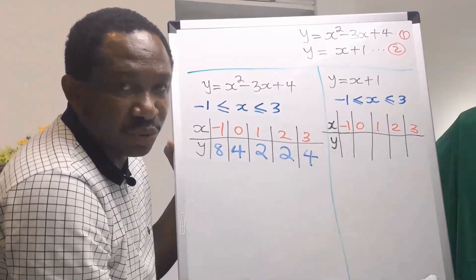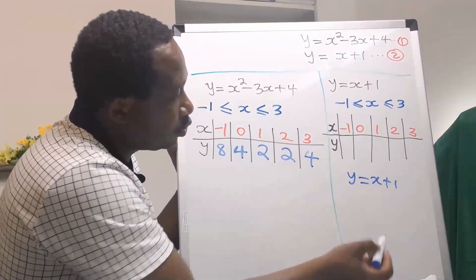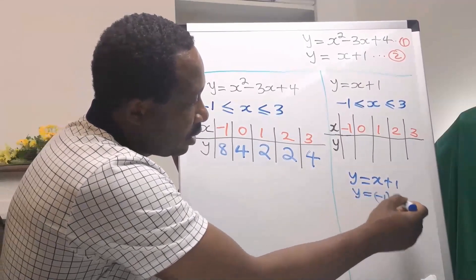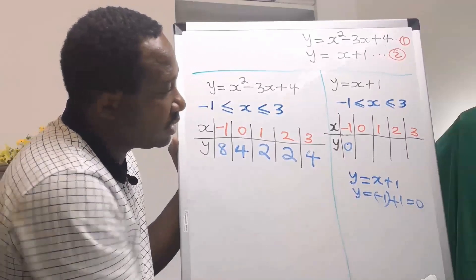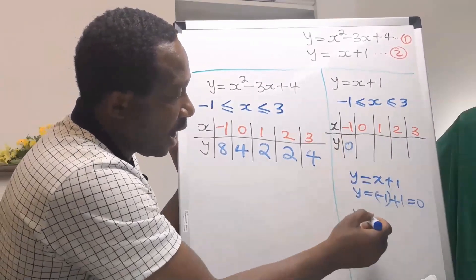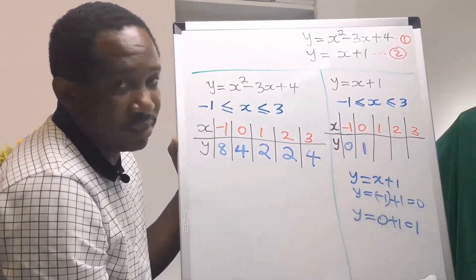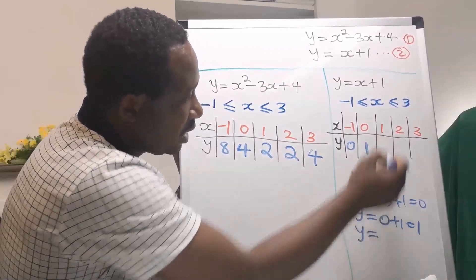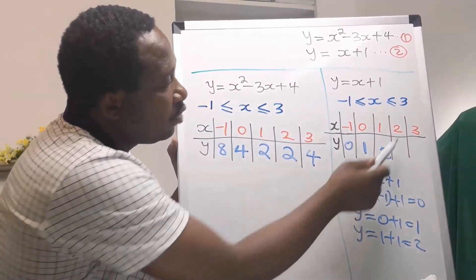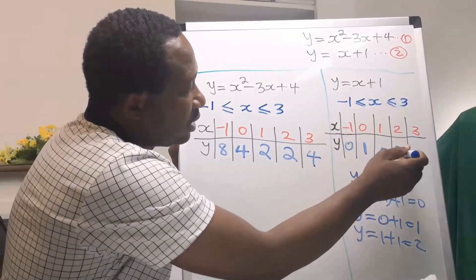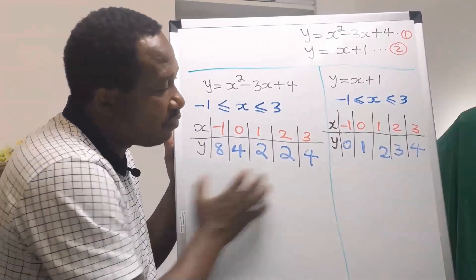Now let's consider Table 2, where y equals x plus 1. For x equals minus 1, y is minus 1 plus 1, which is 0. For x equals 0, y is 0 plus 1, which is 1. For x equals 1, y is 1 plus 1, which is 2. For x equals 2, y is 2 plus 1, which is 3. For x equals 3, y is 3 plus 1, which is 4. Now we have filled our table.